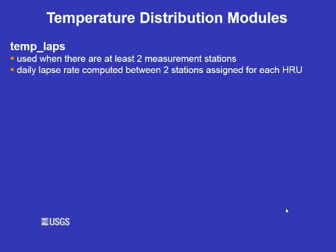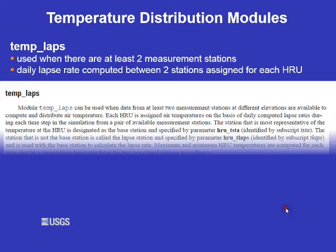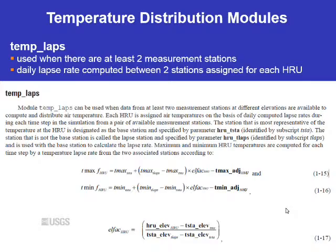The temp_lapse module uses two measurement stations and computes the lapse rates between those two stations for each HRU. For each HRU, the base station is specified by the HRU_T_sta parameter and the lapse station is specified by the HRU_T_lapse parameter. If you want to use this method, make sure you have good quality temperature data because the lapse rates are computed on a daily basis from the station data.